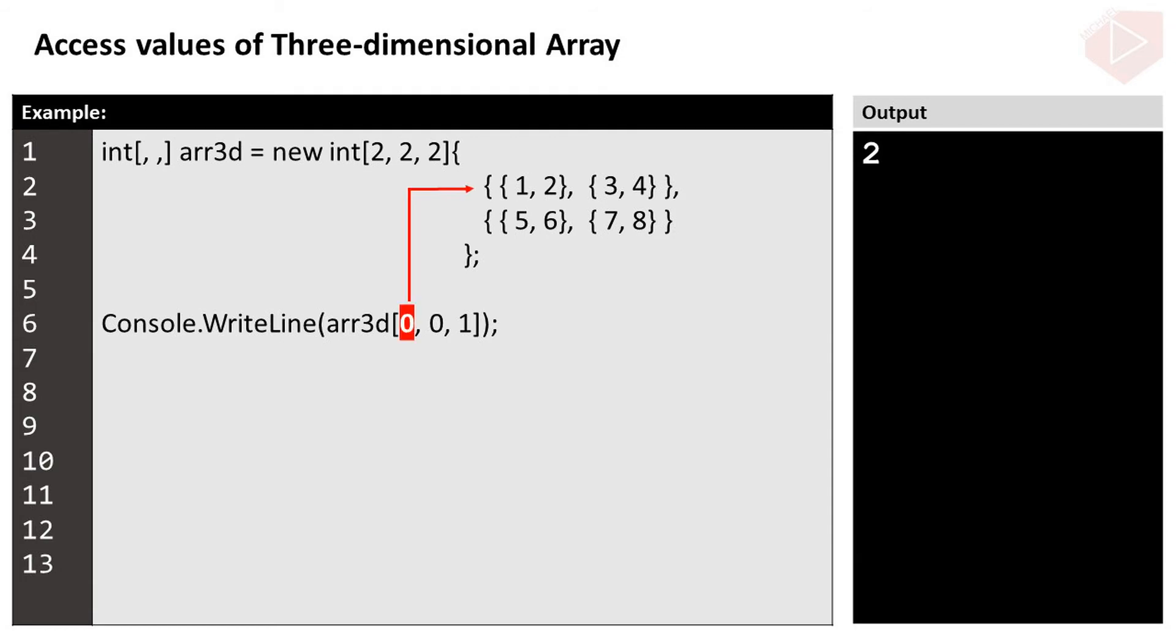The first number in the array is the index of the row. The second number is the index of the column. Now, since a three-dimensional array is an array within an array within an array, the third number is its position in the array, and 2 is positioned at index 1.